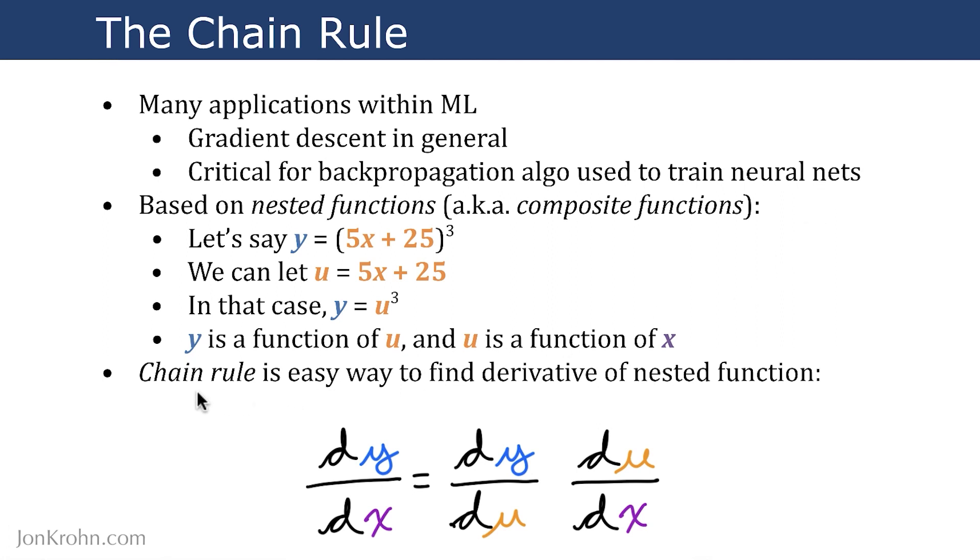And so what the chain rule allows us to do, whether it's just two nested functions or hundreds of them or thousands of them, we can cross out like terms and find the derivative of our outermost variable as a function of the innermost variable. So in this case, we can find dy/dx by calculating the derivative dy/du, and then du/dx, and we can cross out du, and that leaves us with dy/dx. So let's look at a real example to make sense of this.